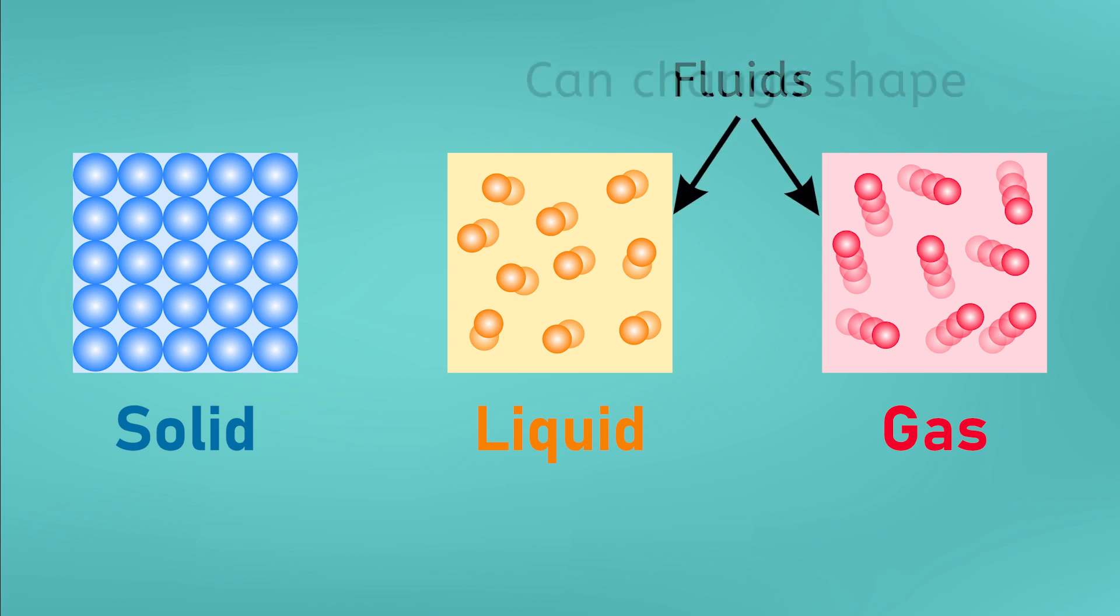Both liquids and gases can change their shape to fill the container they are in, and gases can even expand or compress, changing their volume. Because air is a fluid, understanding how fluids behave in various situations was essential to getting the first planes off the ground.